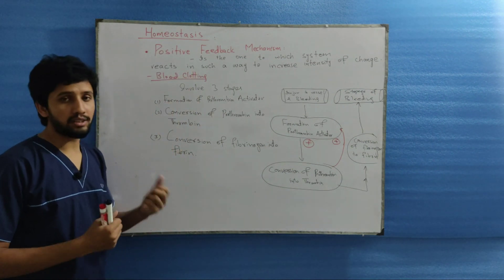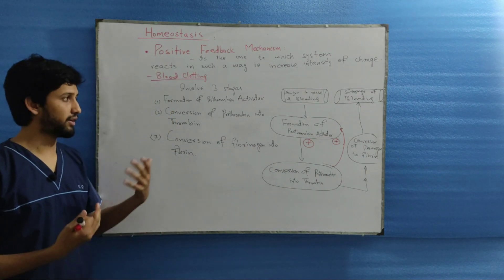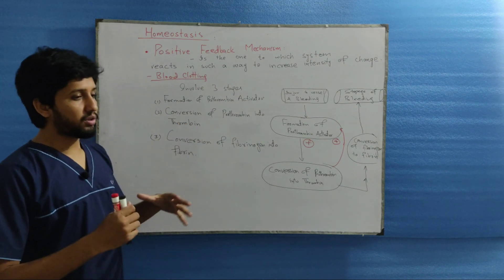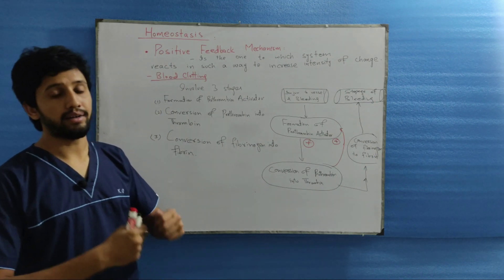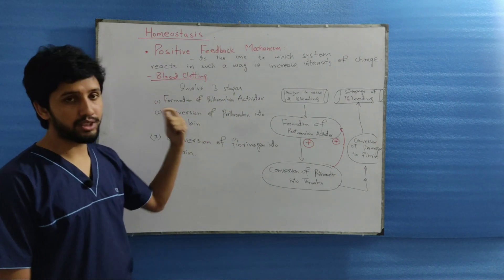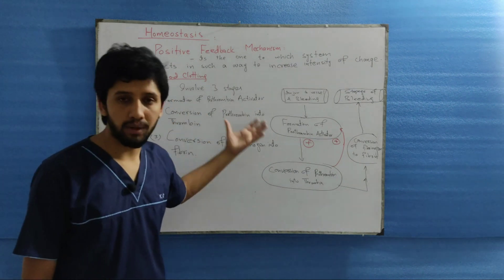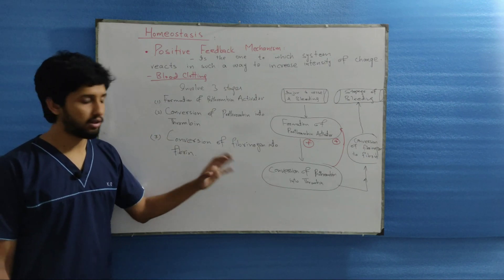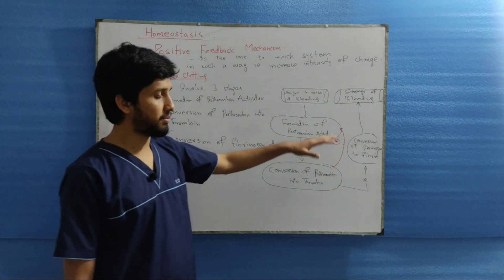This mechanism is less commonly involved, but it is involved in emergency situations, such as blood clotting. Blood clotting is a process in which the stoppage of blood occurs and the bleeding stops. It involves three stages: the formation of prothrombin activator, then the conversion of prothrombin into thrombin, and finally the conversion of fibrinogen into fibrin. Once the fibrin is formed, the clot will be formed and there will be stoppage of the bleeding.